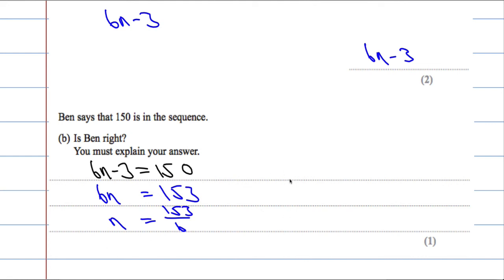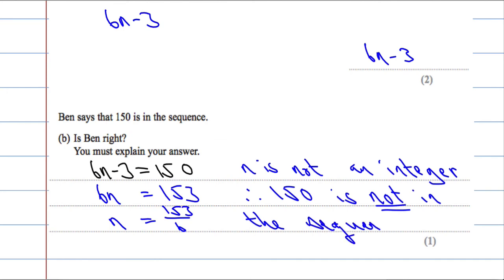That means n is not an integer, because 153 is not divisible by 6. n is not an integer or a whole number. Integer is a whole number. Therefore, 150 is not in the sequence. Okie doke.